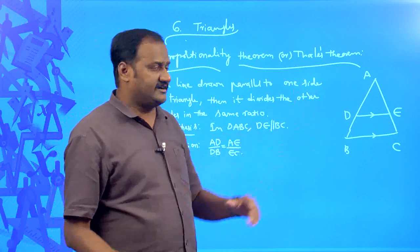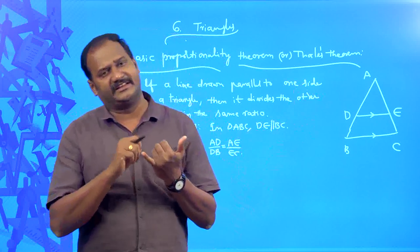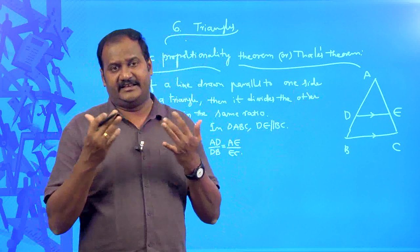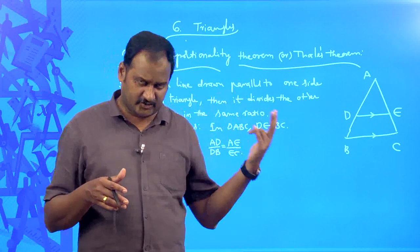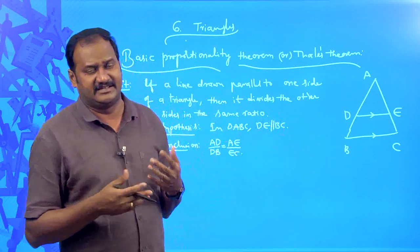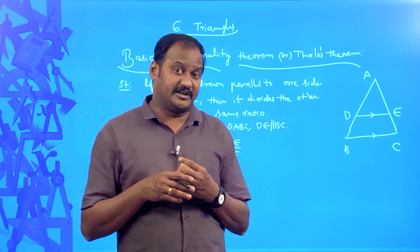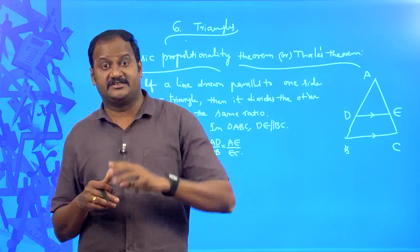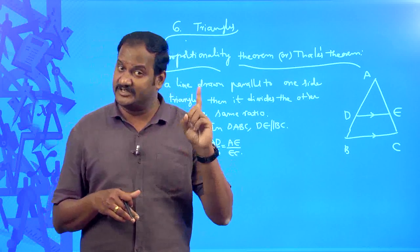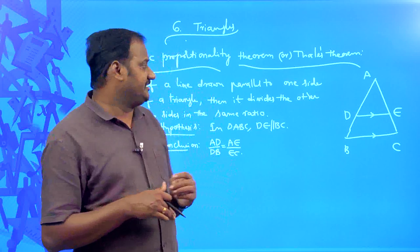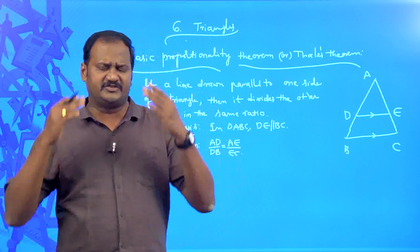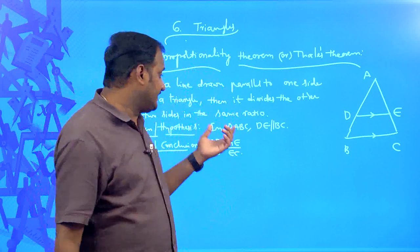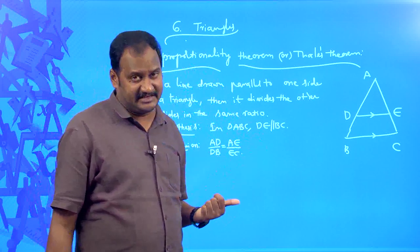Till now, according to triangle concepts, we learned how to find the area and perimeter of a triangle. Area of a triangle can be calculated in two ways: when altitude and the corresponding base are given, or when three sides are given, we can find area using Heron's formula. Here we need to prove AD/DB is equal to AE/EC, so you need to explore and think about how to prove this.